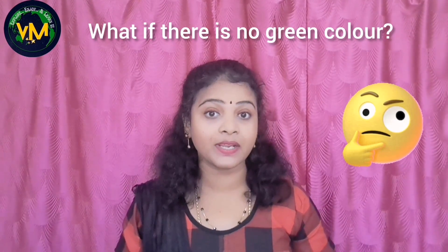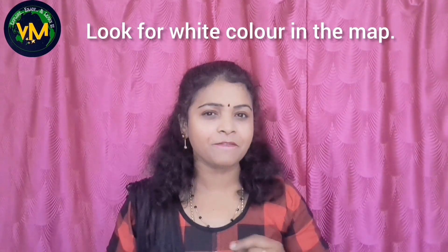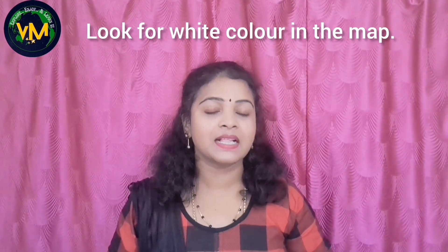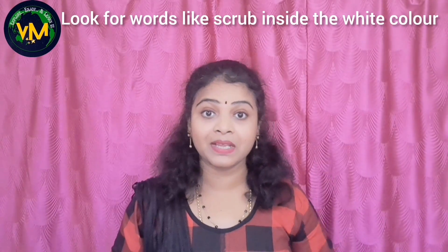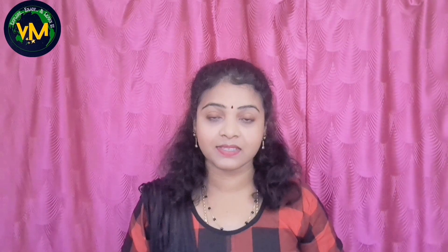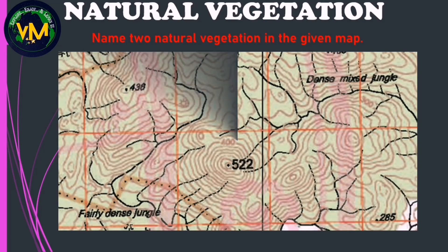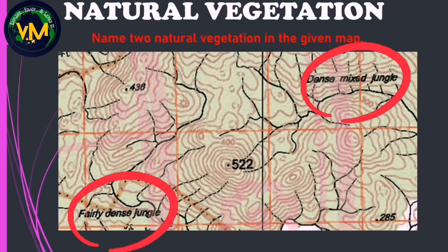But in case there is no green color in the given map, then go for white color. Definitely in white color parts there will be some words related to scrub, like open scrub. That should be written as the answer. Now can you name two vegetation in this map? Yes, fairly dense jungle and dense mixer jungle is the answer.